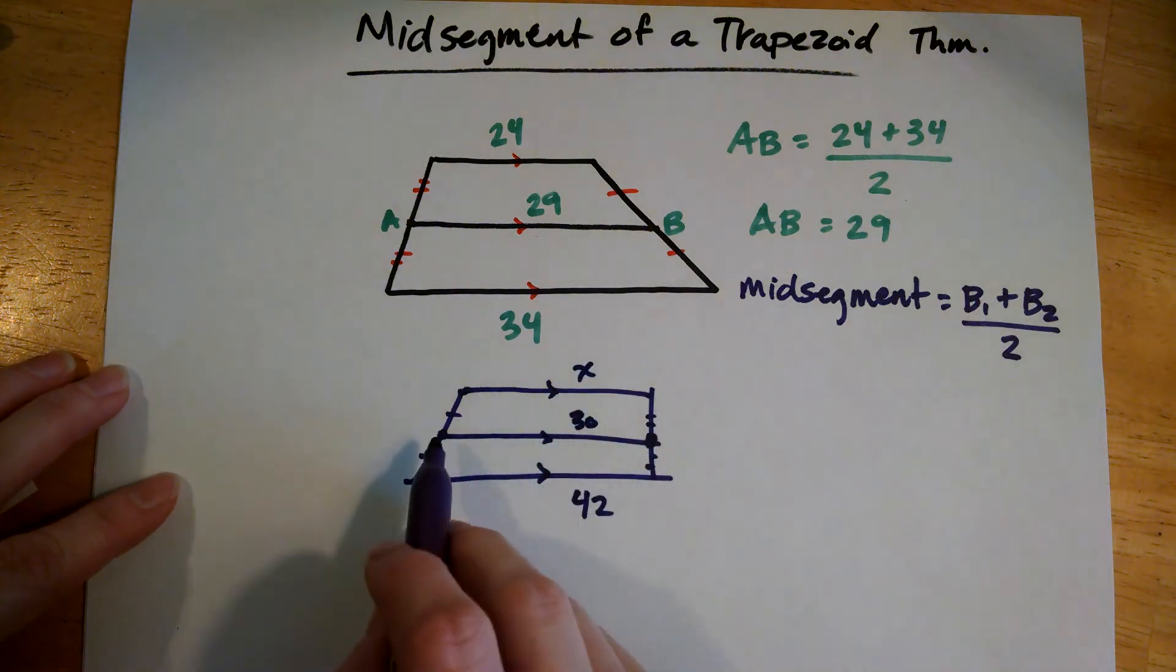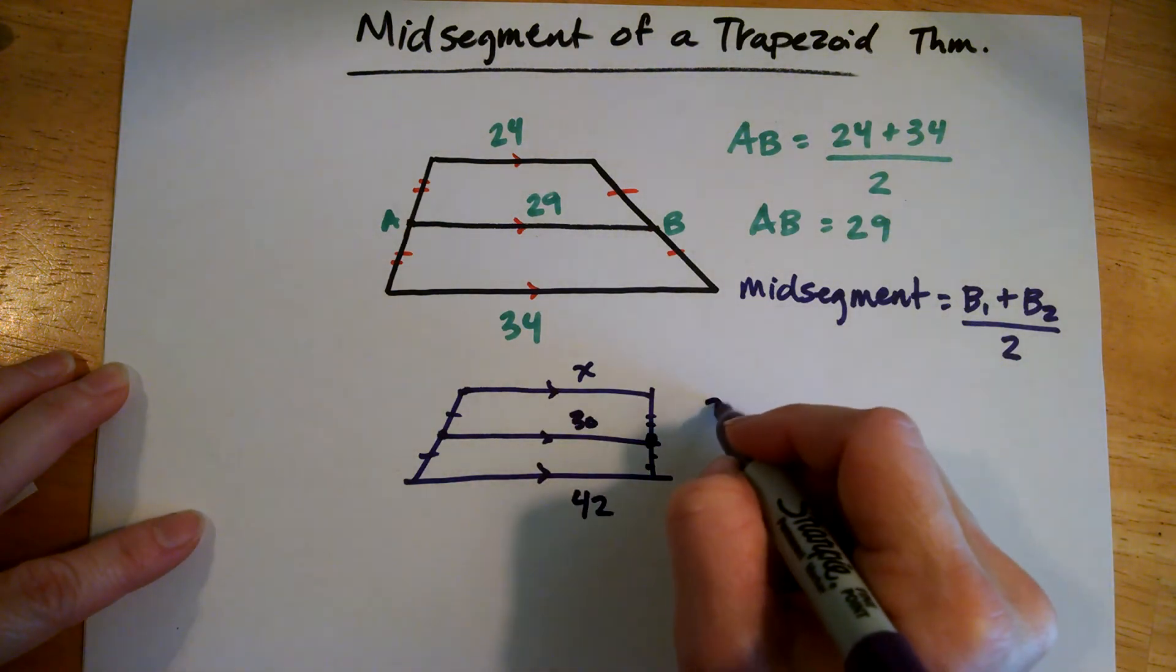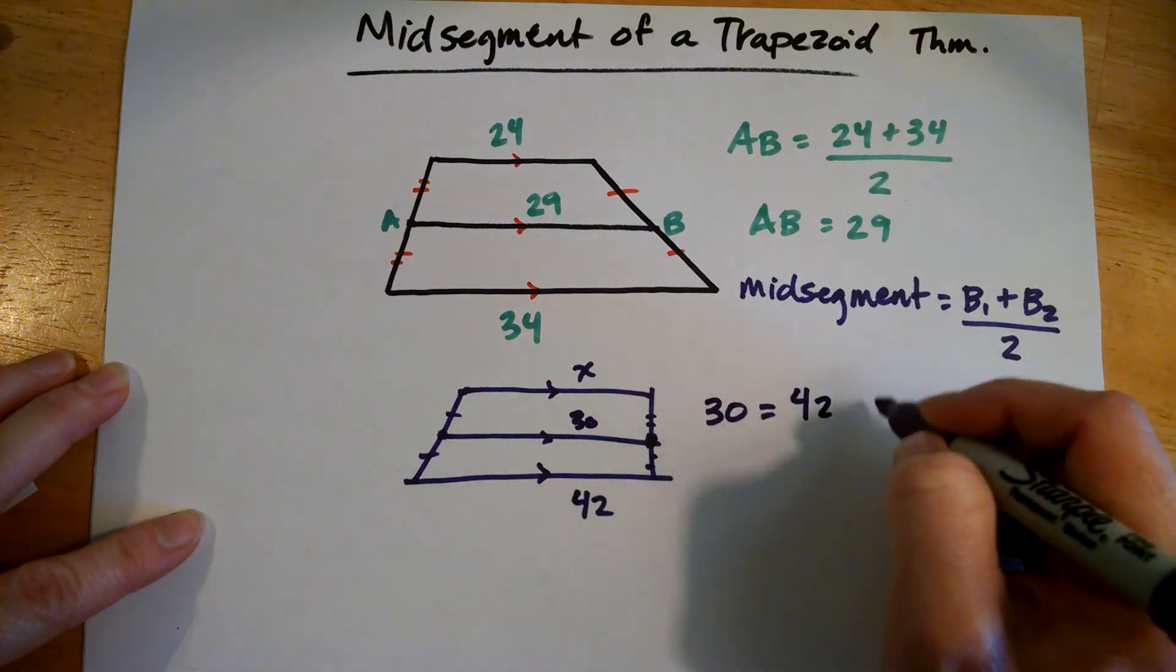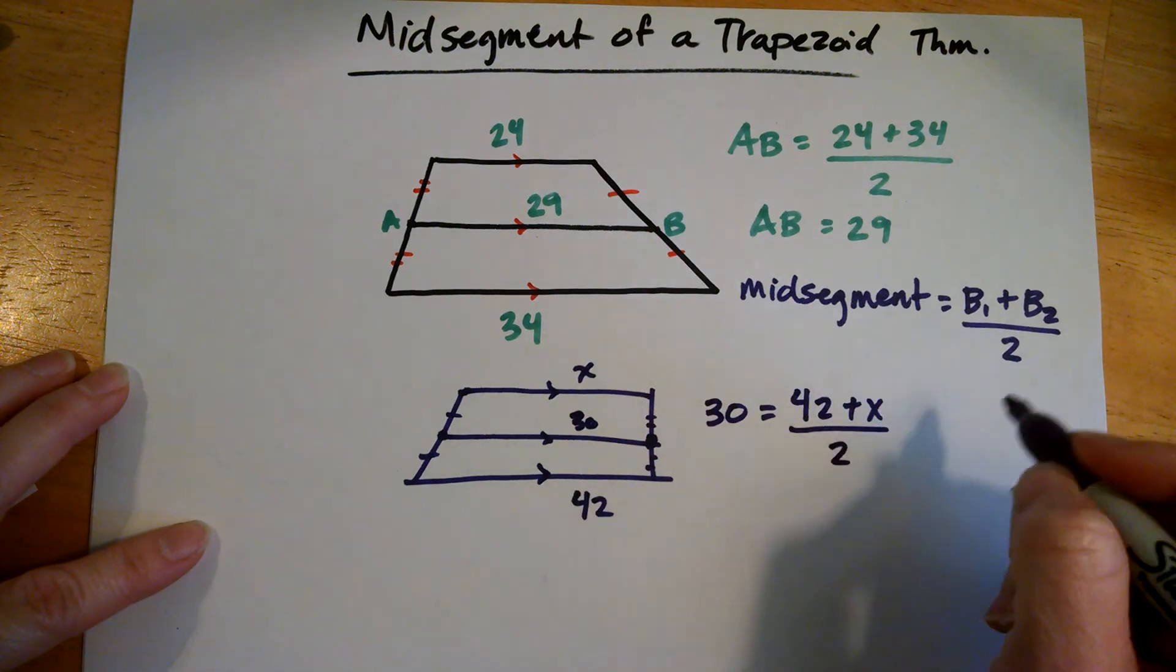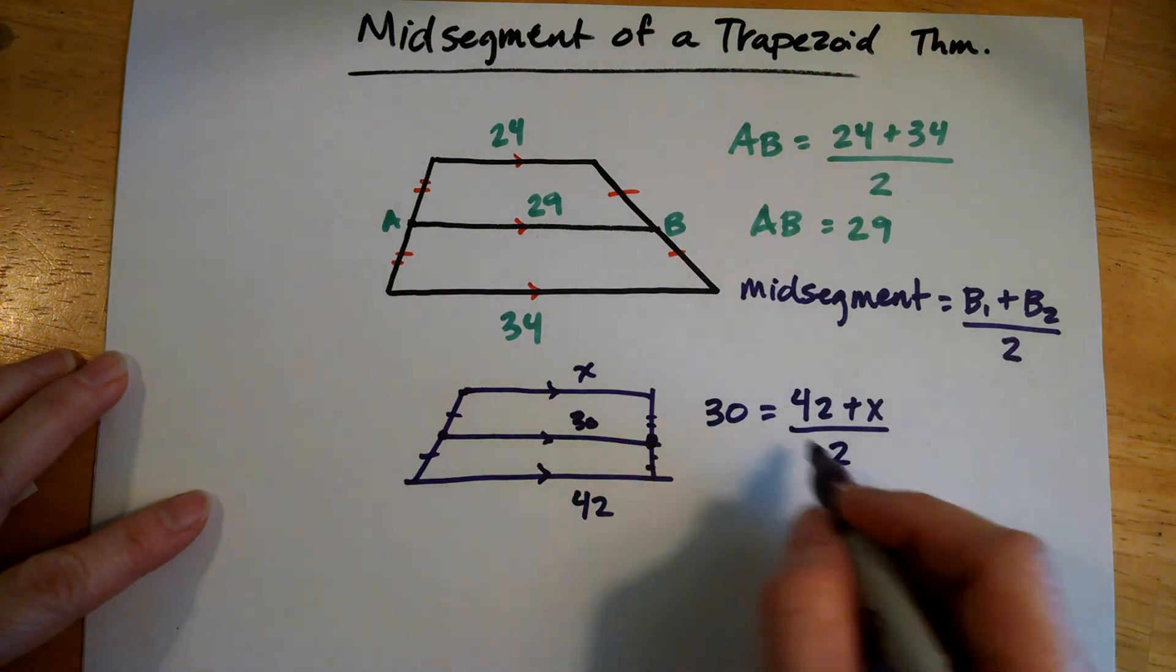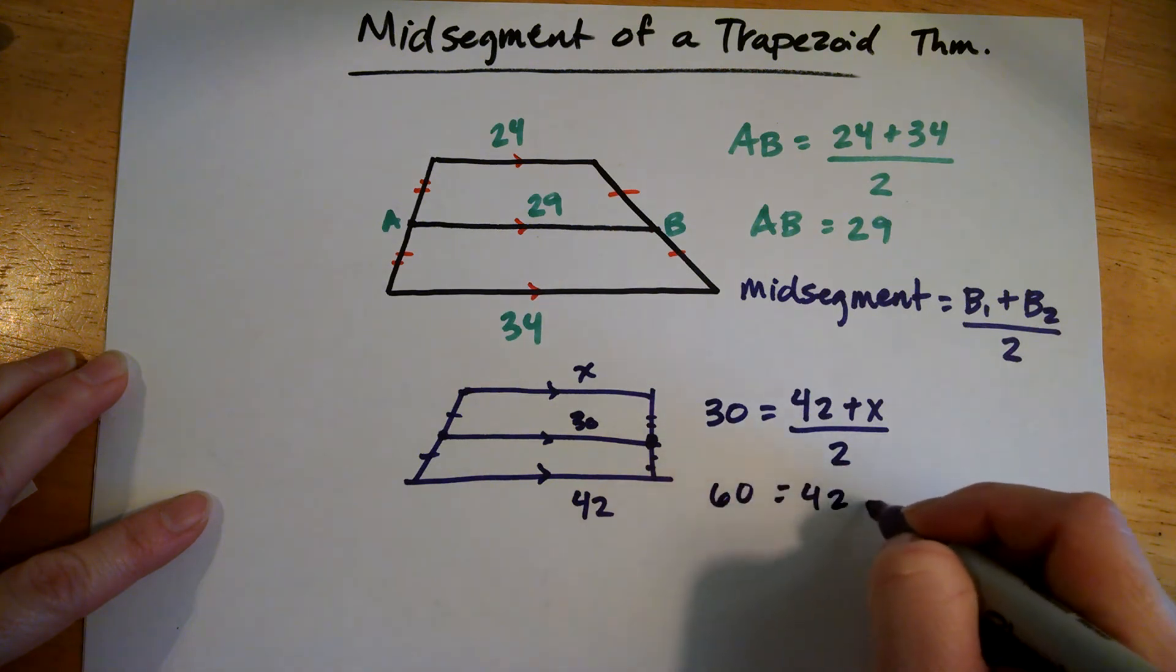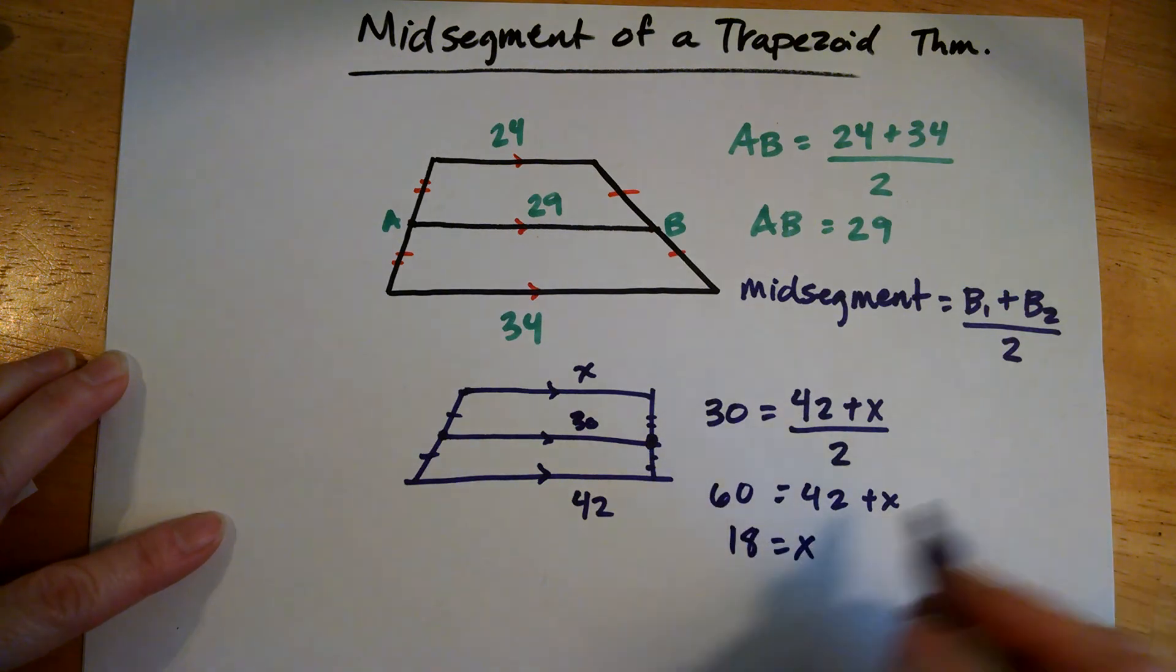So I know that my mid-segment is the average of those two bases. So 30 should equal 42 plus x, or x plus 42. The average of that. So we're going to multiply by 2 on both sides and that would be 60 equals 42 plus x. Subtract 42 and 18 equals my x.